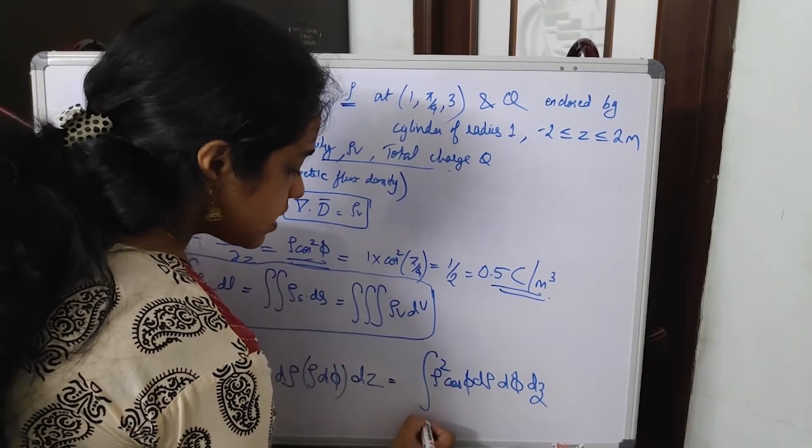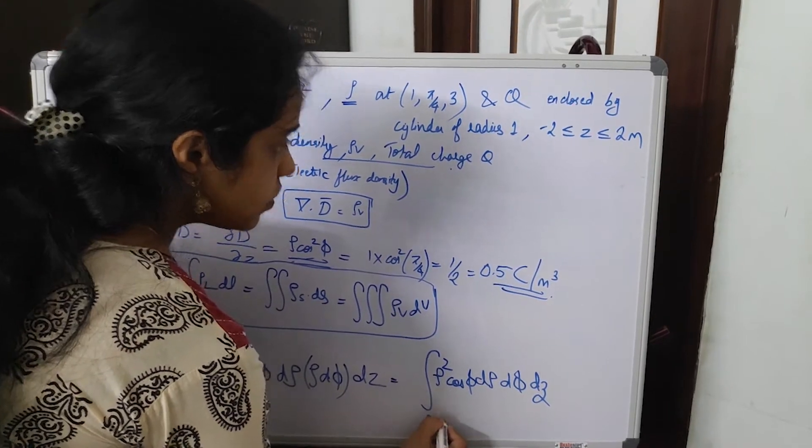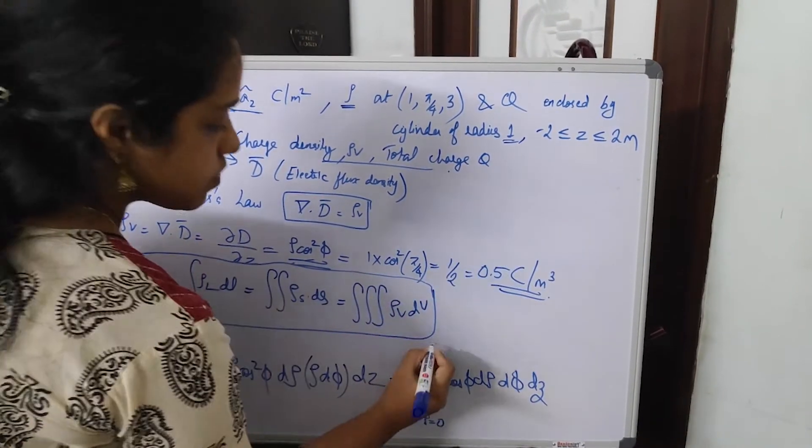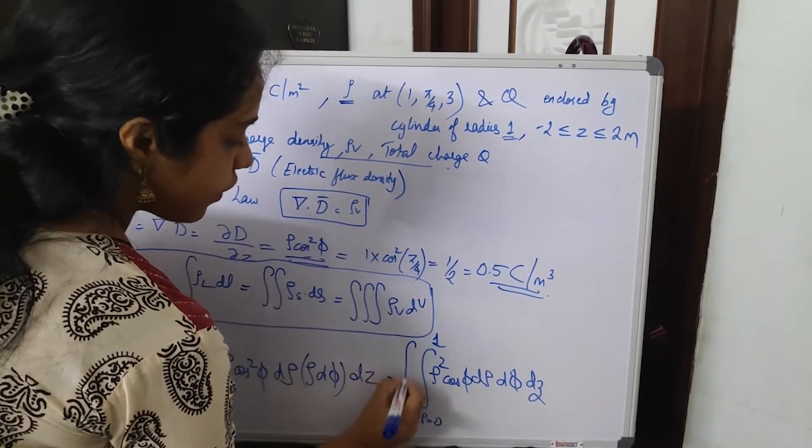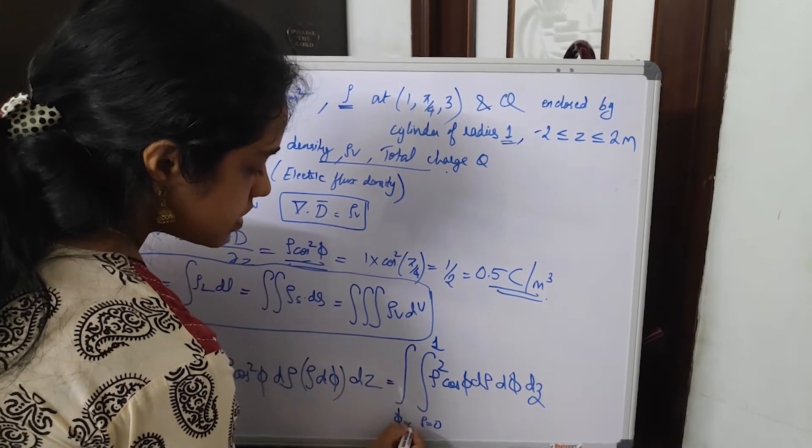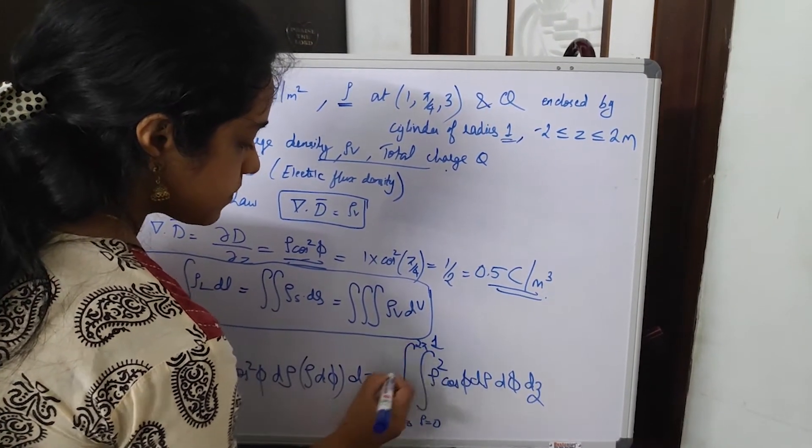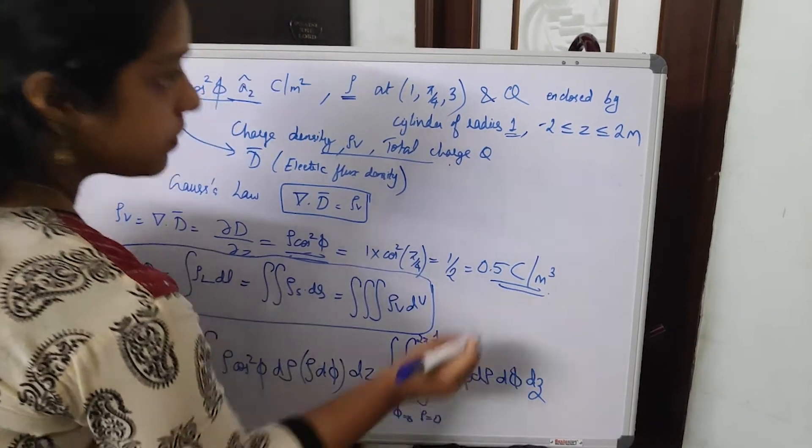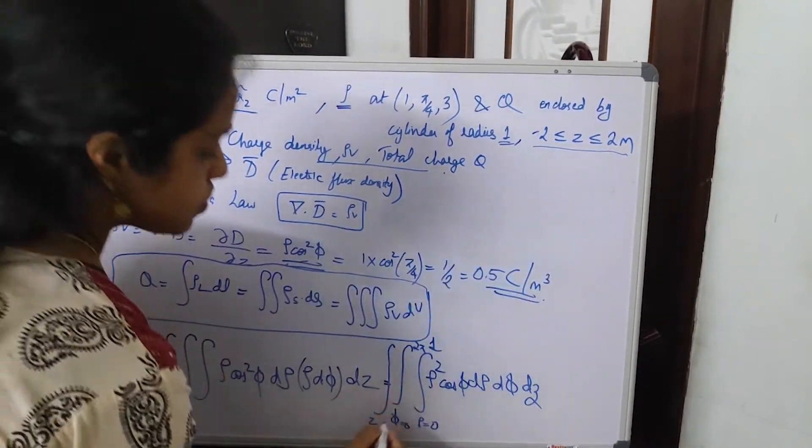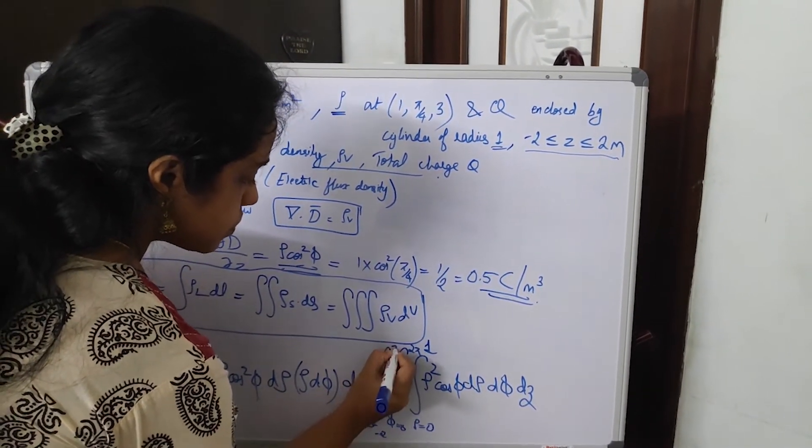And what are the limits? Rho varying from 0 to 1 because radius is given as 1. Phi varying from 0 to 2 pi. And Z is varying from, it has given minus 2 to 2. Z will vary from minus 2 to 2.